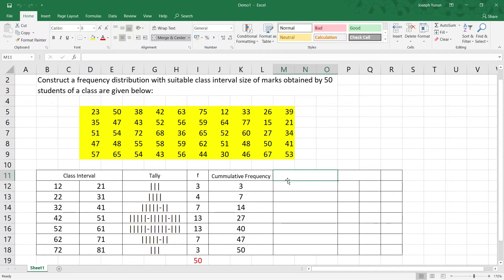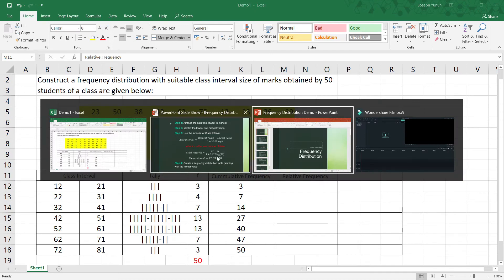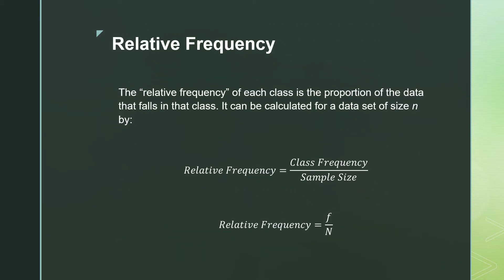Another column is relative frequency. The relative frequency of each class is the proportion of data that falls in that class. It is calculated using the formula: relative frequency equals class frequency (F) divided by the sample size (n).